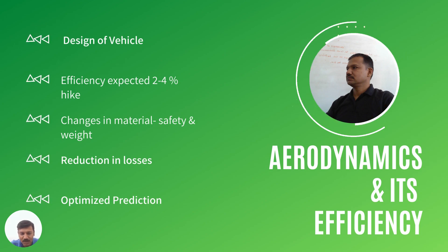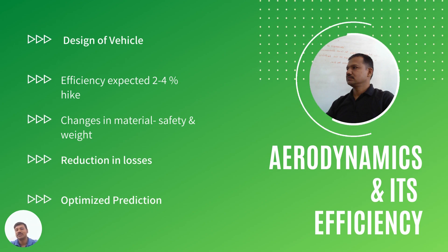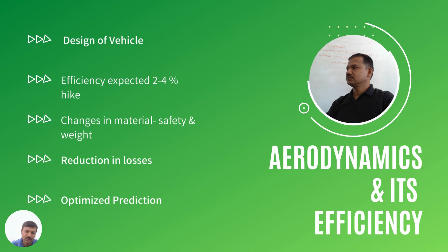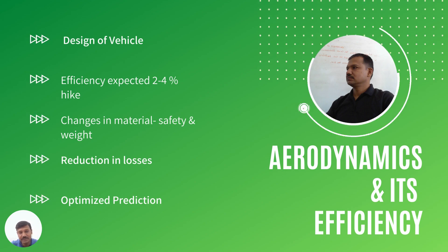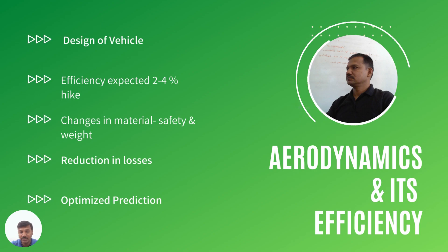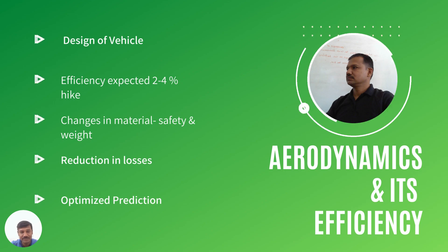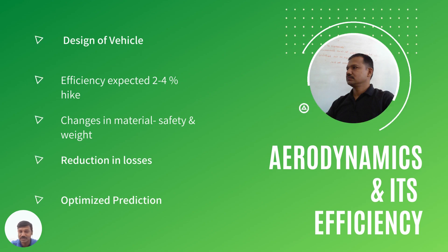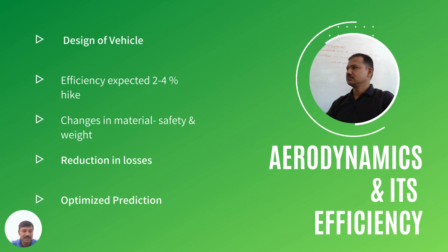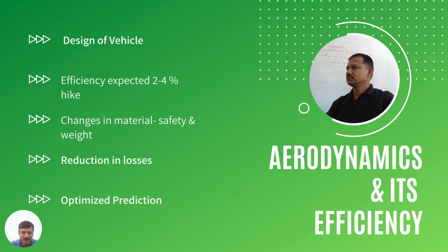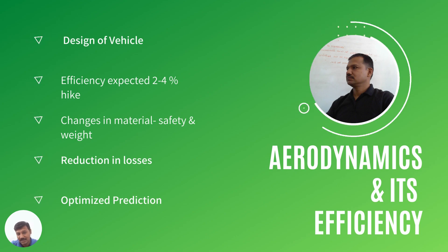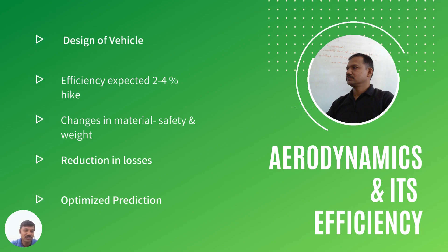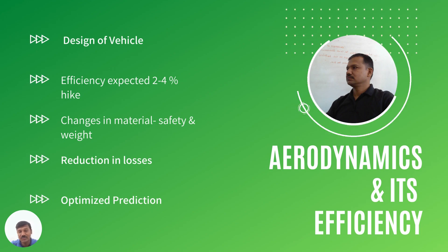First is aerodynamics and efficiency. In this sub-domain of EV you can work on vehicle design — perhaps a new look — and on how efficiency can be increased and how air friction losses can be reduced. The expected efficiency gain is around two to four percent. You have the option of changing materials to improve this.